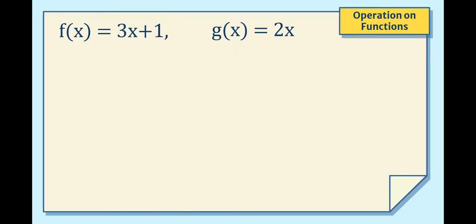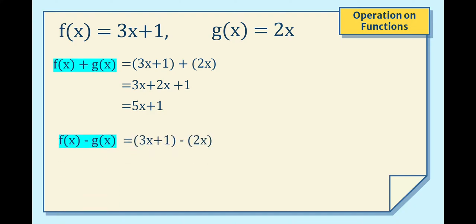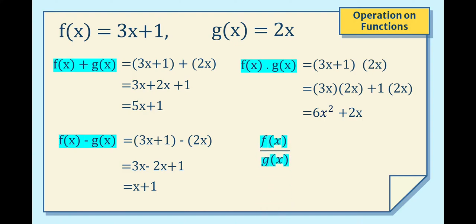Suppose we have two given functions: f(x) = 3x + 1 and g(x) = 2x. Finding the sum means we add 3x + 1 plus 2x, which gives 5x + 1. Finding the difference means 3x + 1 minus 2x, which gives x + 1. Finding the product means multiplying 3x + 1 times 2x, giving 6x² + 2x. And finding the quotient is (3x + 1) over 2x.